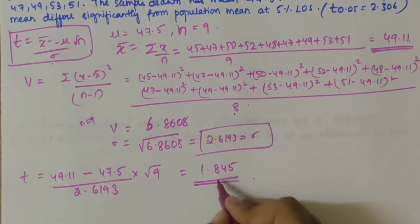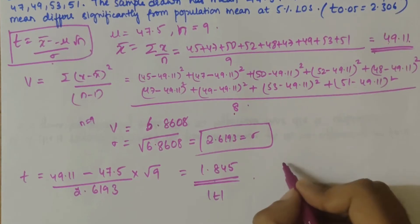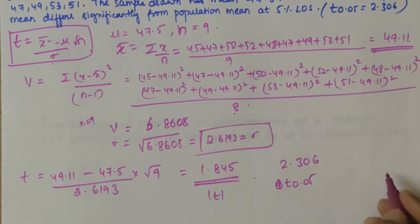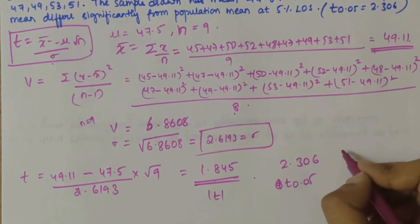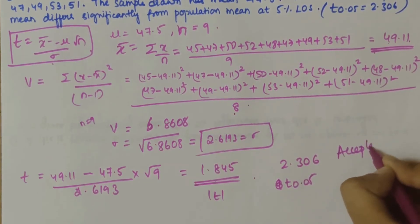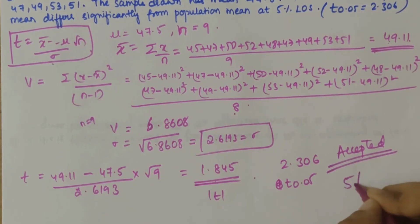The value which we have got, t, is less than 2.306, that is t at 0.05. So, the given hypothesis is accepted at 5 percent level of significance.